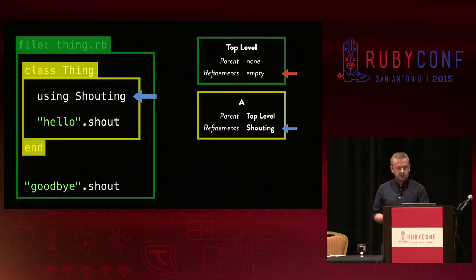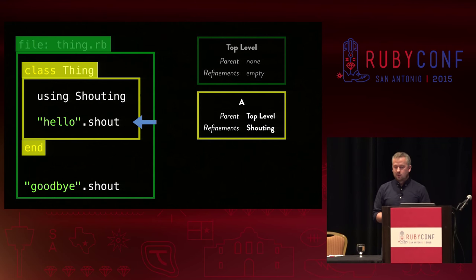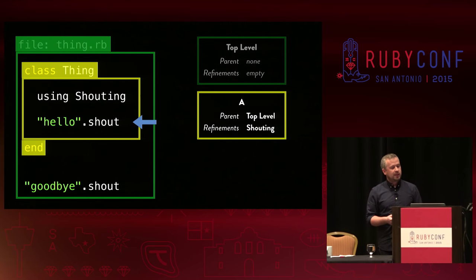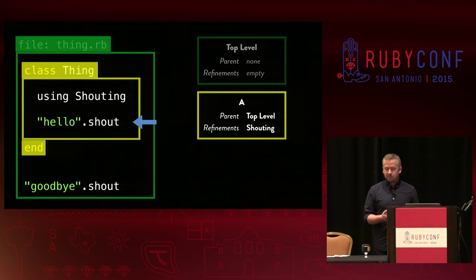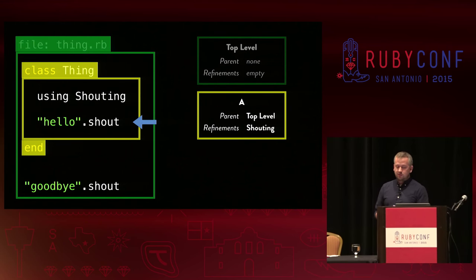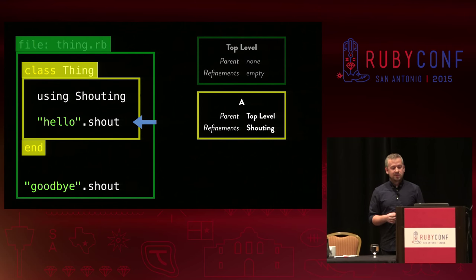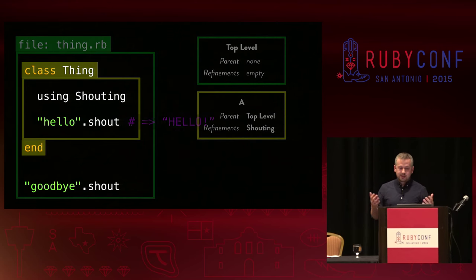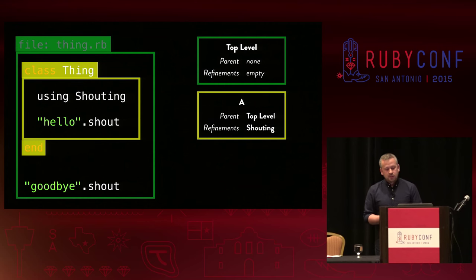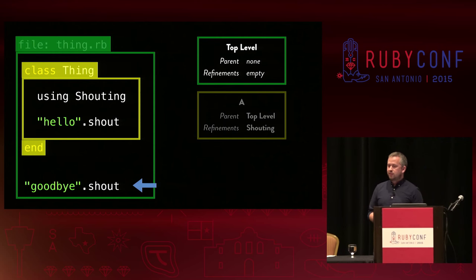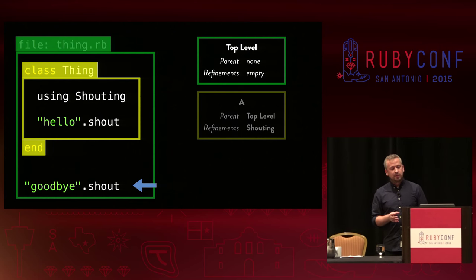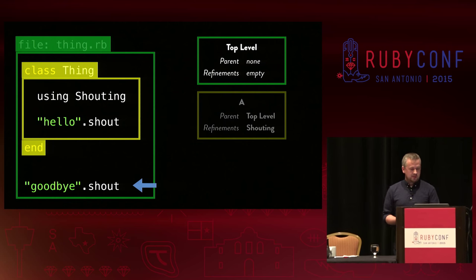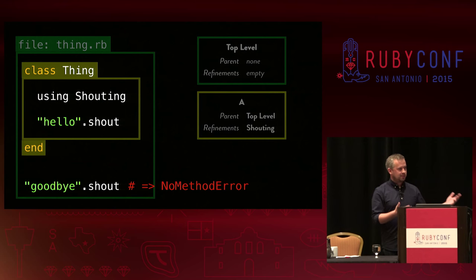When there's a call to the method shout on a string instance, one of the things that happens is that Ruby checks to see if there are any activated refinements in the current lexical scope that might affect this method. In this case there is an activated refinement for the shout method on strings, which is exactly what we're calling. So Ruby looks up the correct method body within the refinement rather than the class and invokes that instead of any existing method. Once we leave the class definition, the current lexical scope becomes the top level scope again. When Ruby dispatches for the shout method it checks the current lexical scope for any refinements — and in this case there are none — so Ruby invokes method_missing, which raises an exception, and that's why we get our no method error.